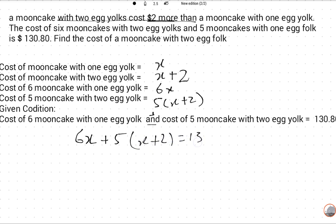So how we will solve: 6X plus 5(X + 2) equals 130.80. 6X + 5X + 10, because 5 will multiply inside of the bracket.